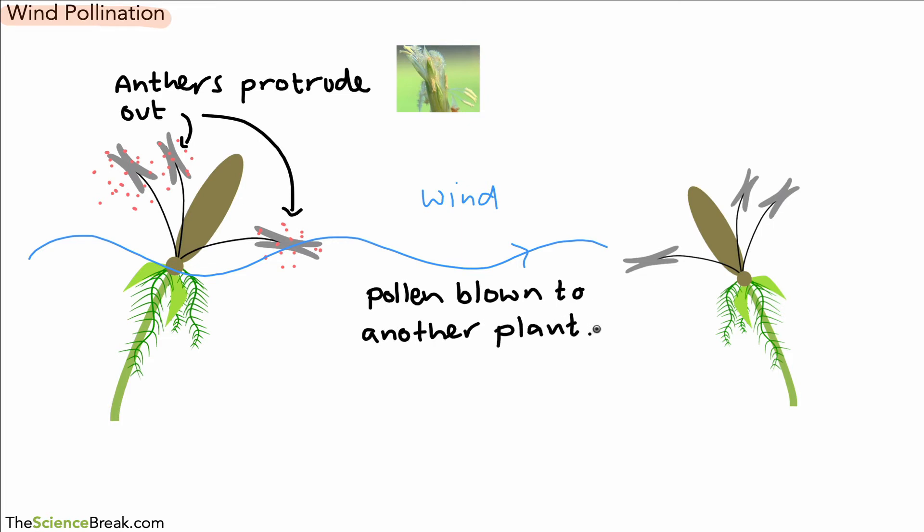So pollen is blown to another plant by the wind, and there you can see the pollen being blown over. But this time it attaches, remember, not to the anthers on the other plant, but it attaches to the long feathery stigmas.